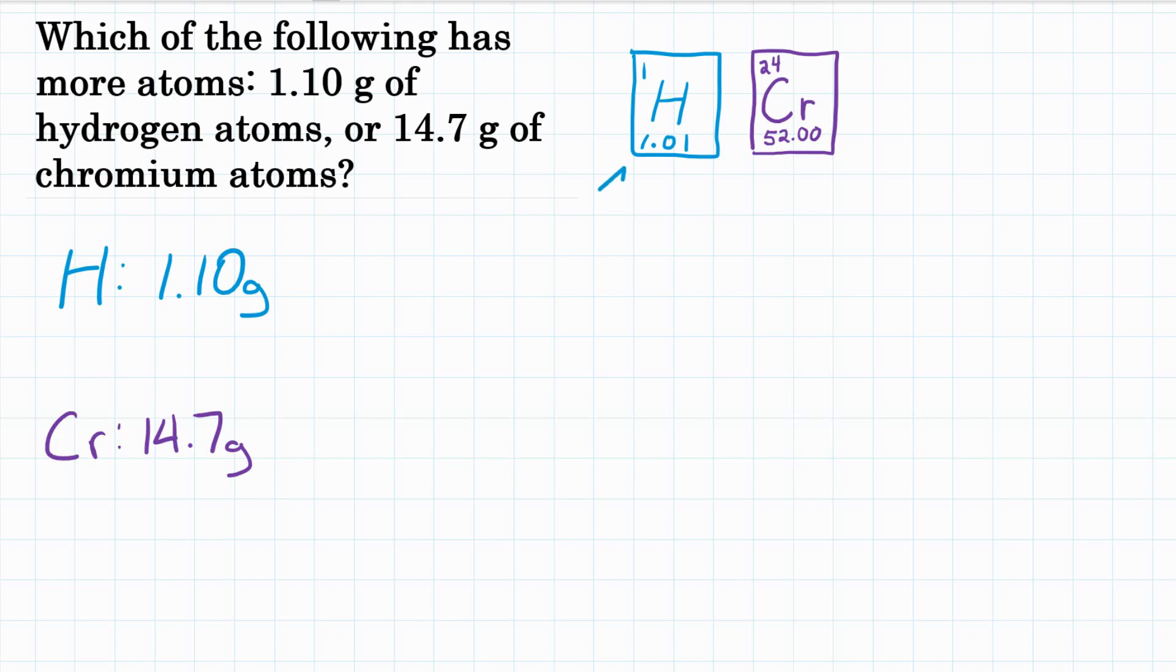Hydrogen has a molar mass that's very small. It's 1.01. It's the lightest element. That means to have a mole of hydrogen atoms, we would only need 1.01 grams. We have more than that. We have 1.10, so we have over a mole of atoms of hydrogen.